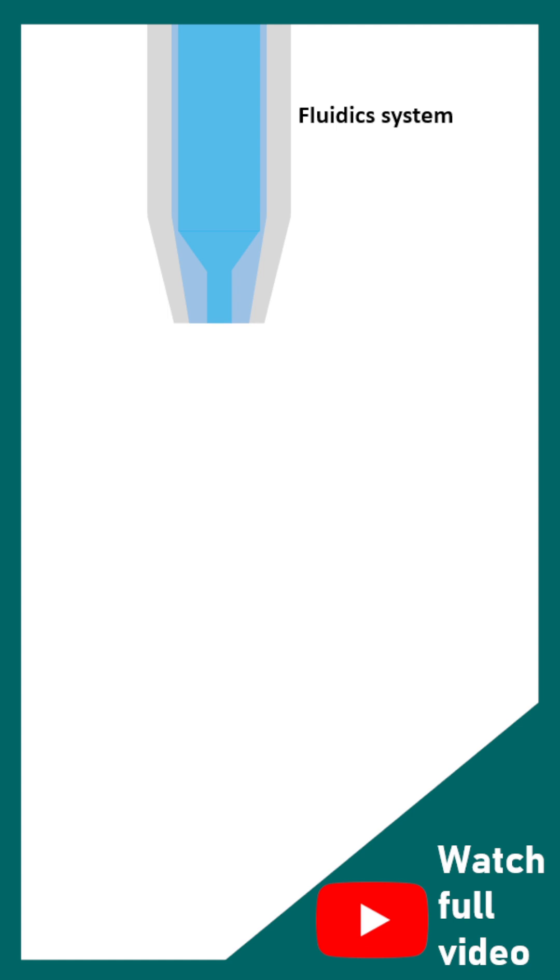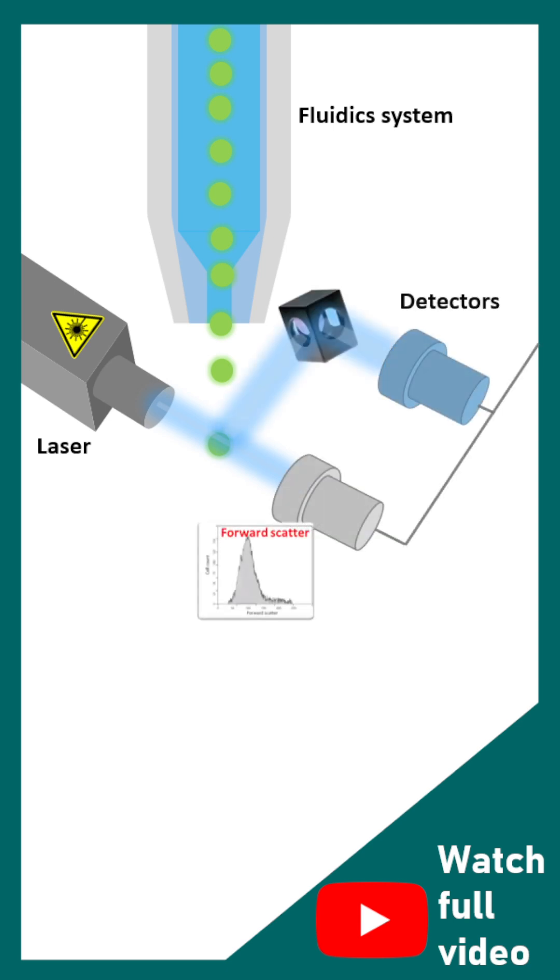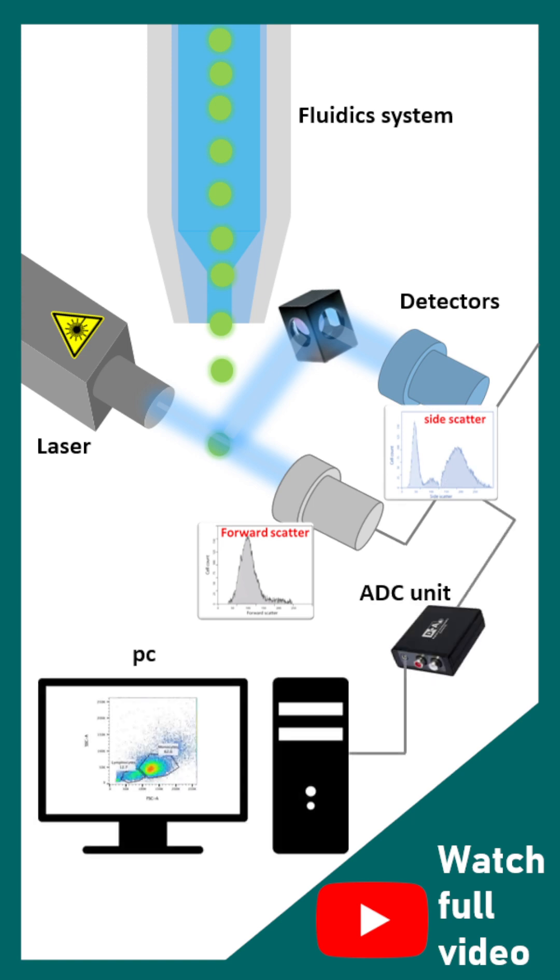In FACS, there is a fluidic system which channels cells in a streamlined fashion. A laser hits each cell while it passes through the stream and the scattered lights are detected by forward or side scatter detectors. The entire data is projected to the PC where we can understand and see the plots.